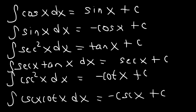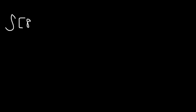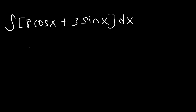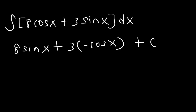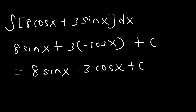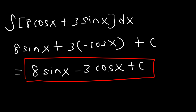Now let's work on some example problems. Integrate 8 cosine x plus 3 sine x dx. The antiderivative of cosine is sine, so this gives 8 times sine x. The antiderivative of sine is negative cosine, so we get minus 3 cosine x. Don't forget to add plus c. The final answer is 8 sine x minus 3 cosine x plus c. If you know the formulas, integrating trig functions like this is very straightforward.